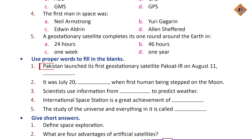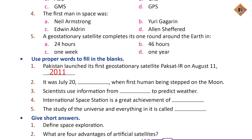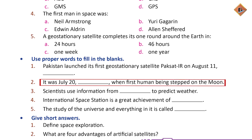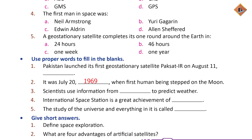Pakistan launched its first geostationary satellite, Paksat-IR, on August 11, 2011. It was July 20, 1969, when the first human being stepped on the moon.